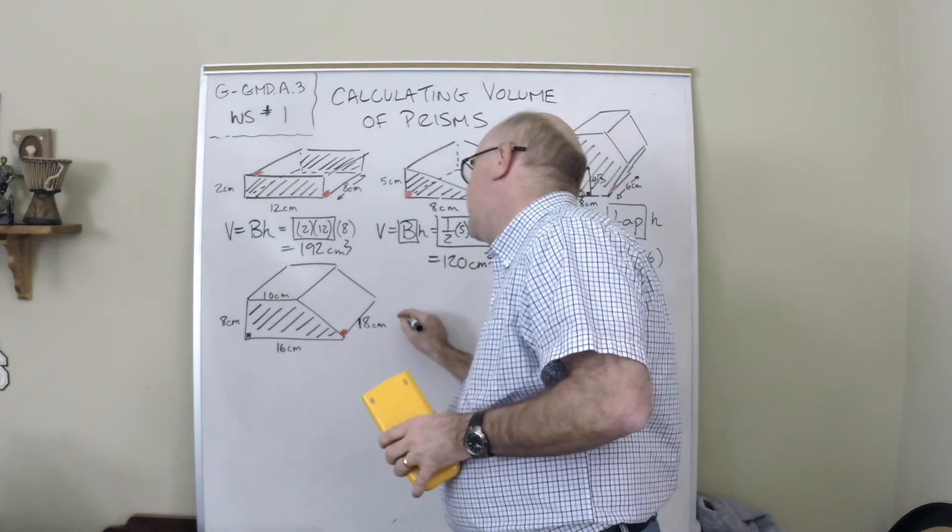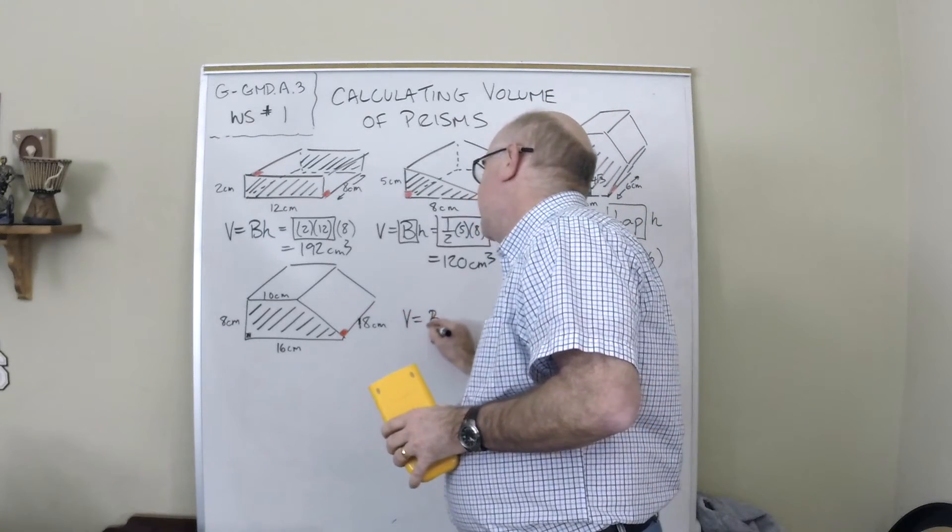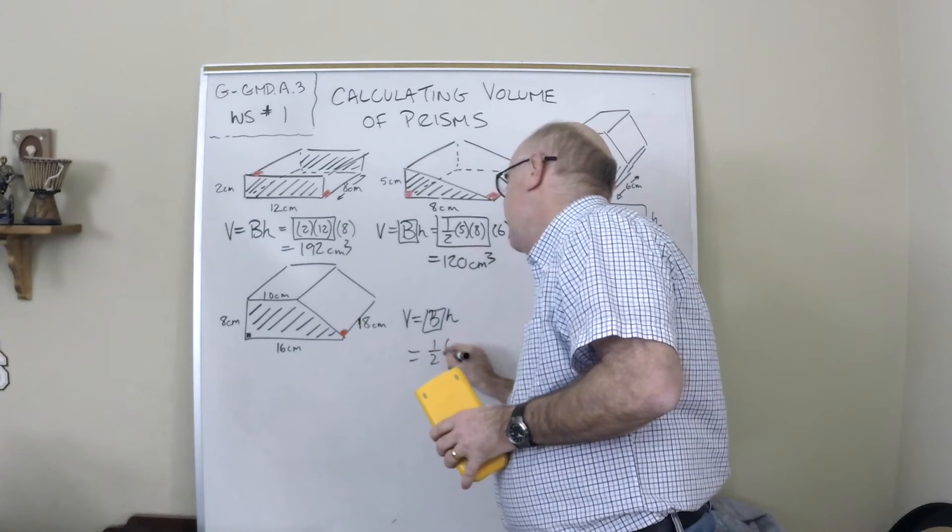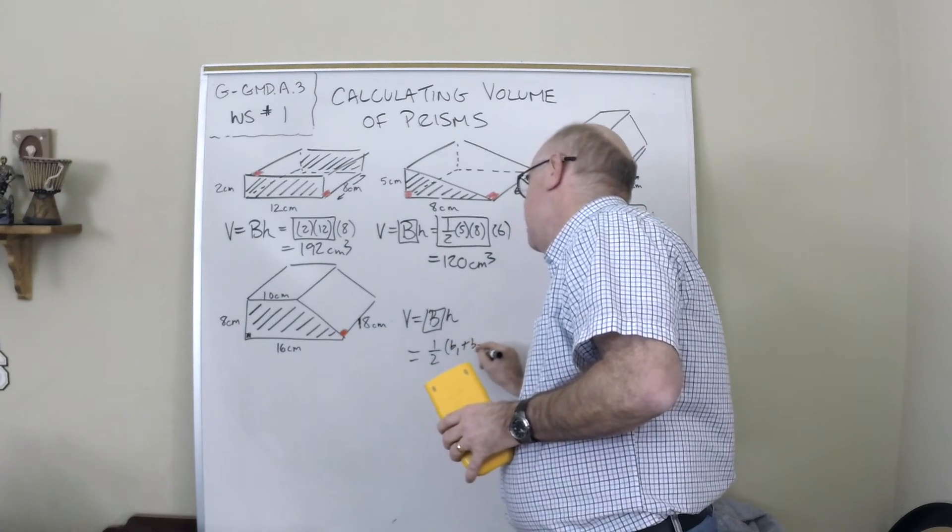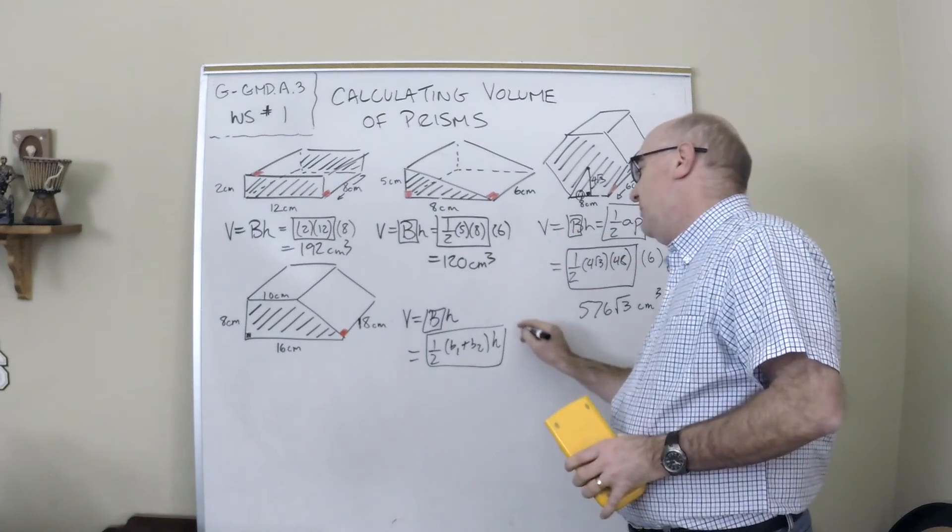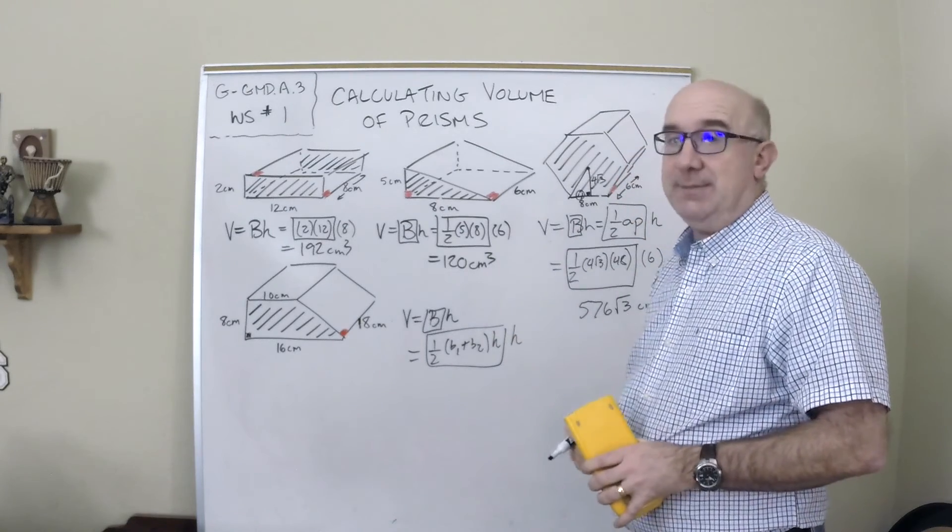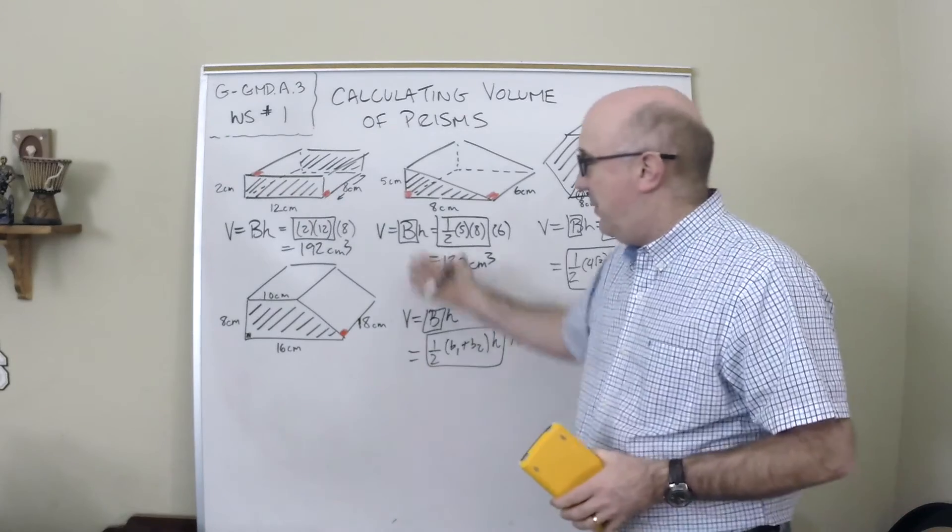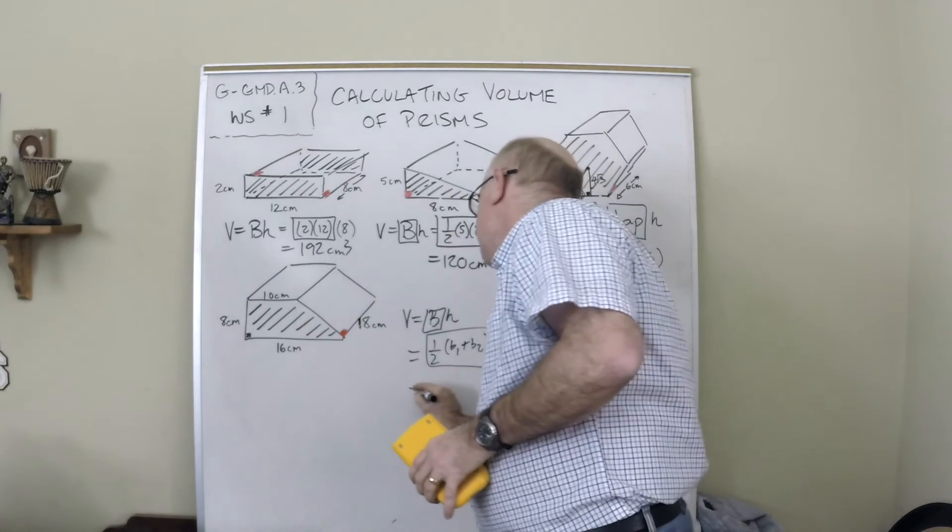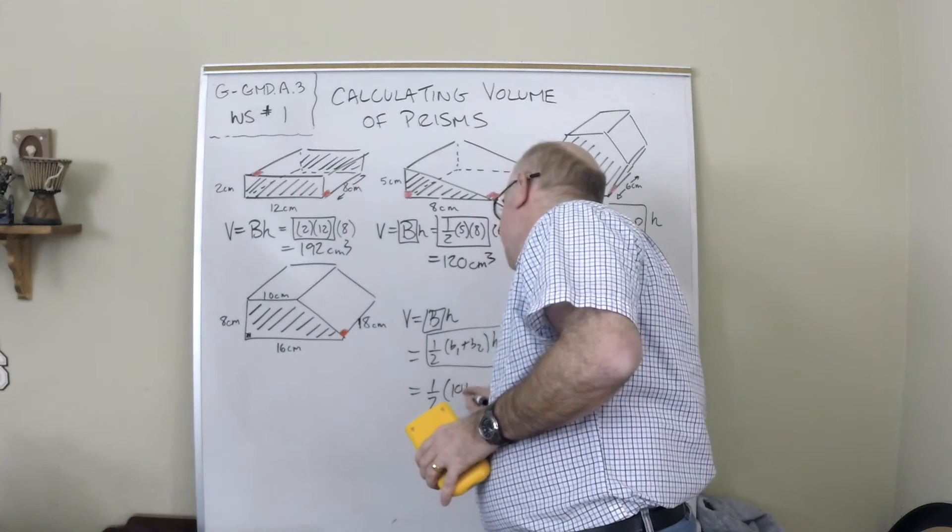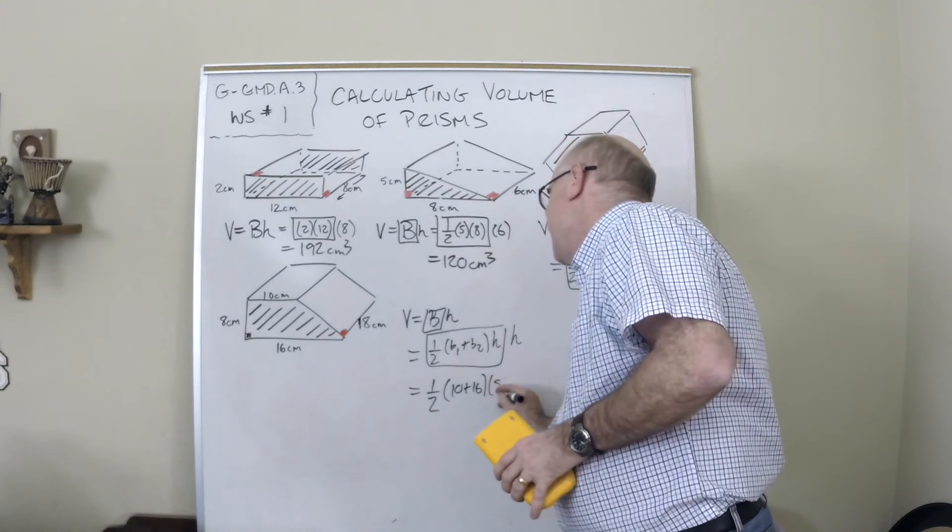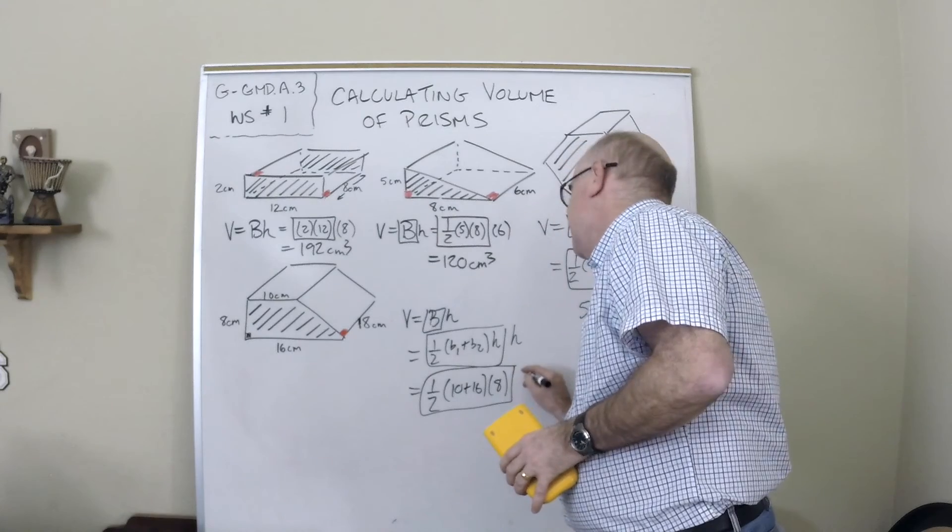All right. The final one is a trapezoid. So we're doing volume is the area of a base times the height. The area of the base here is one half B1 plus B2H. All of that is just the one base times the actual height of the prism. Now this is why we went back and reviewed all those formulas so we could be doing what we're doing right now. So here we go. One half, 10 and 16. The height of the trapezoid is 8 and the overall height is 18.